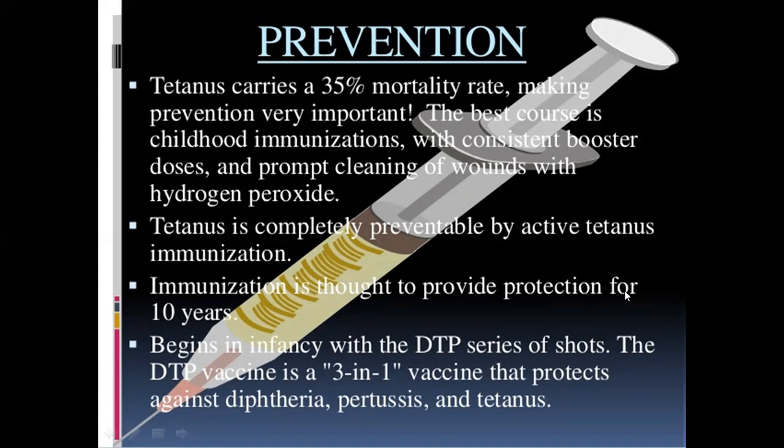Immunization is provided to give protection for 10 years. It begins with the DTP series of shots. DTP is a 3-in-1 vaccine that protects against diphtheria, pertussis and tetanus.